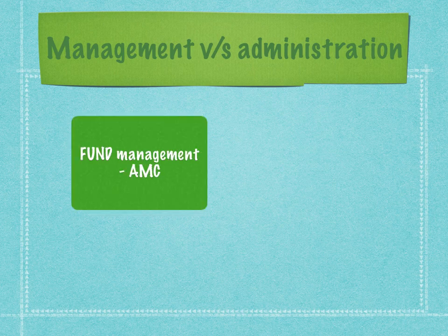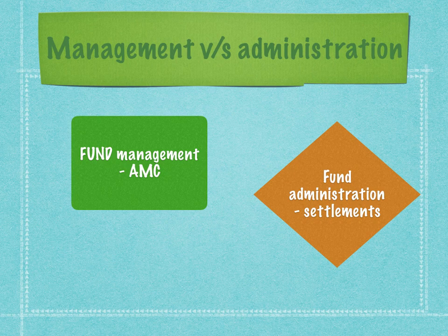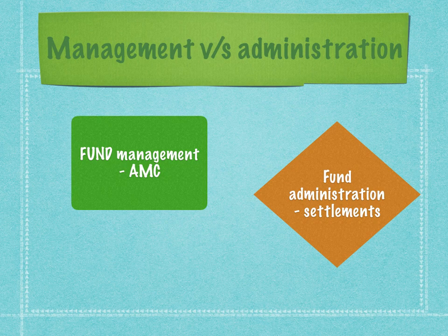Fund management is the front office job of the asset management company. The fund management industry is huge — the top three largest funds in the United States run over a trillion dollars in assets under management. Because of this size, there are global trades in multiple currencies, assets, and markets. There are governing laws and accounting standards that must be maintained by fund administration. Therefore, most hedge funds have bifurcated fund activities into two: fund management and fund administration. Fund management looks at trading and investing in different asset classes.